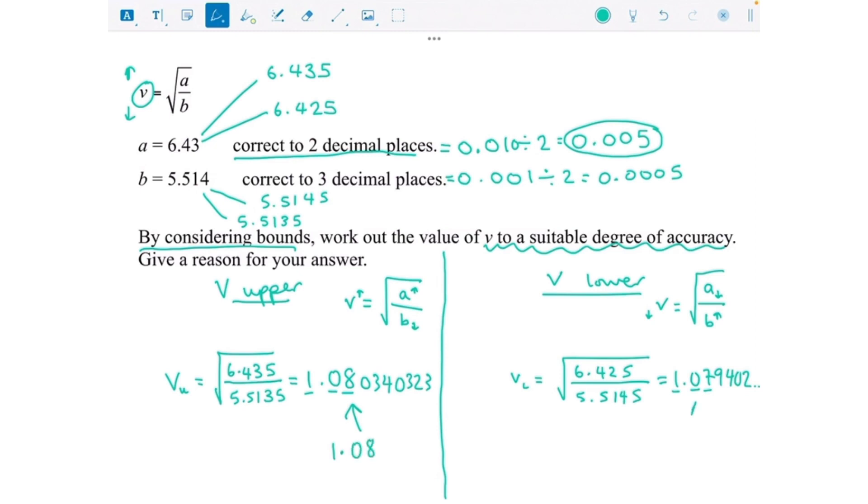And this number rounds to 1.08 because the 9 would round that up. However, if I go to any more decimal places, the answers are going to be different. So we're going to say that our answer is 1.08 because they both round to this with two decimal places.